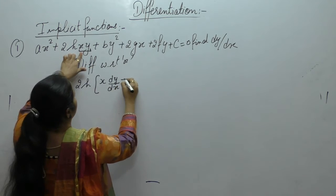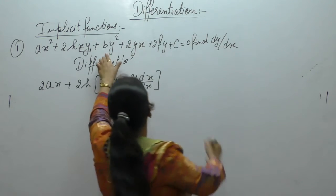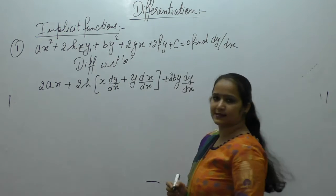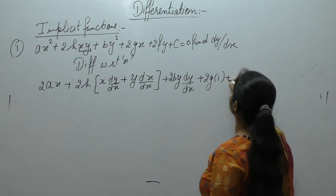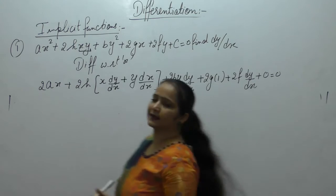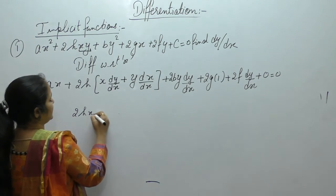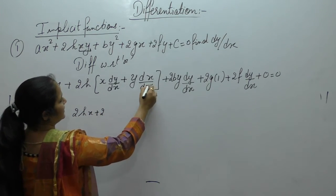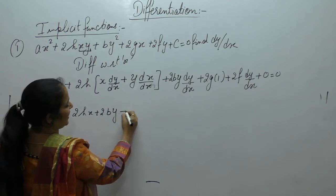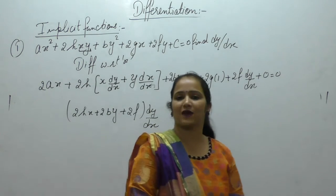Plus second as it is, derivative of first function. Then for by², derivative of y² is 2y·dy/dx. Plus 2g, derivative of x is 1. Plus 2f, derivative of y is dy/dx. c is constant so its derivative is 0. Now we separate the dy/dx terms: 2hx + 2by + 2f multiplied by dy/dx.